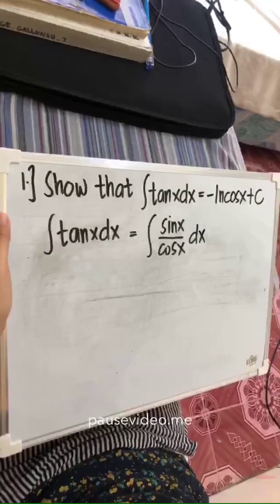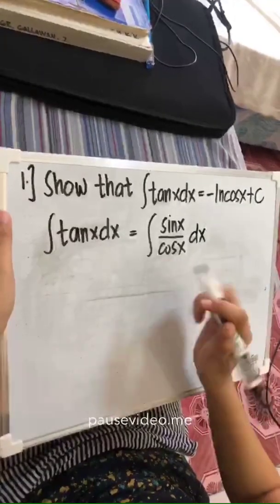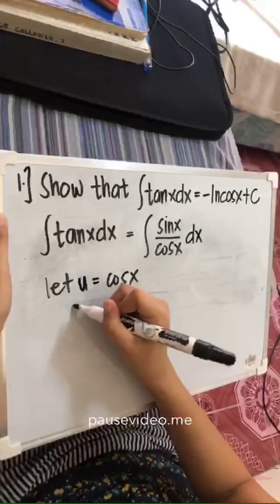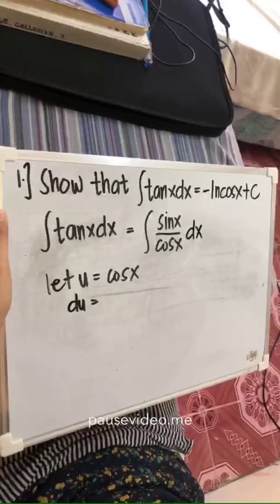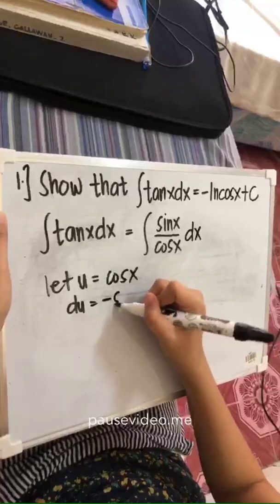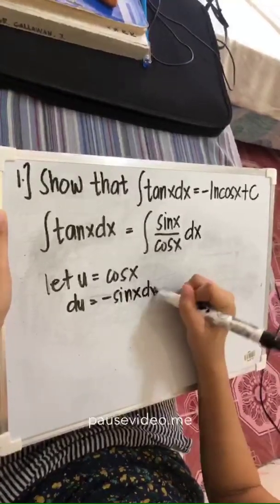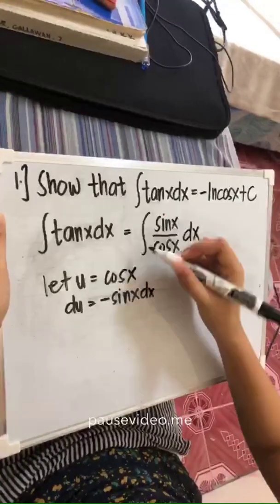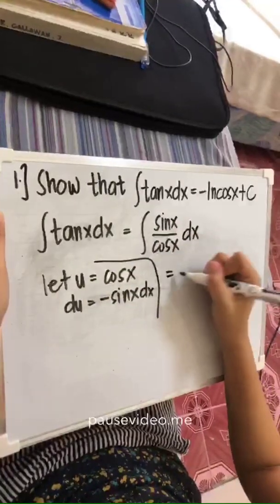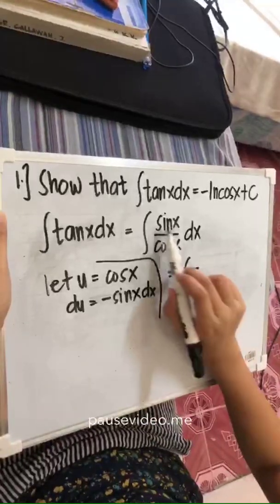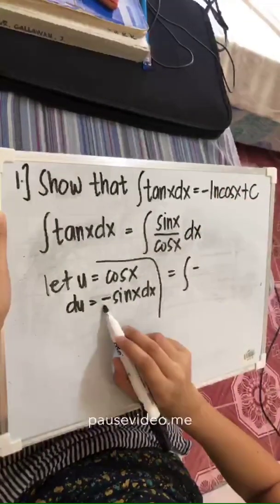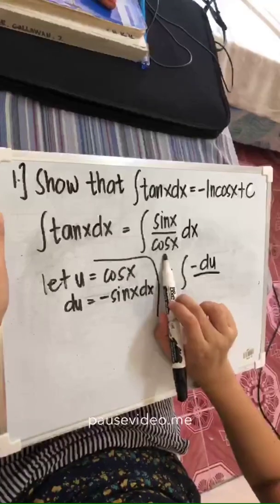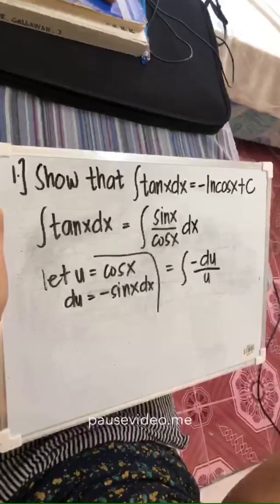We just have to let cos x as our u. So let u equal to cos x. The derivative of our u is du equal to negative sin x dx. As you can see, sin x dx is positive here, so this is equivalent to negative du. Since it's positive in the numerator and negative in the derivative, we put negative du over u, where u is cos x.